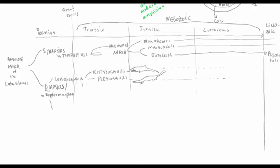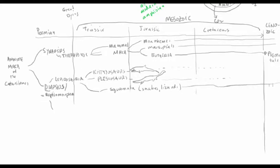Another lineage of Lepidosaurs splits into two groups: one is the Squamata — our lizards and snakes group. Lizards came first and the legless snakes evolved later, but both are still around. The other group of Lepidosaurs still present today are tuataras. They look just like an iguana but are not closely related to modern lizards and snakes at all — it's an ancient split from the squamates. Tuataras are technically a fourth group of reptiles, quite obscure.